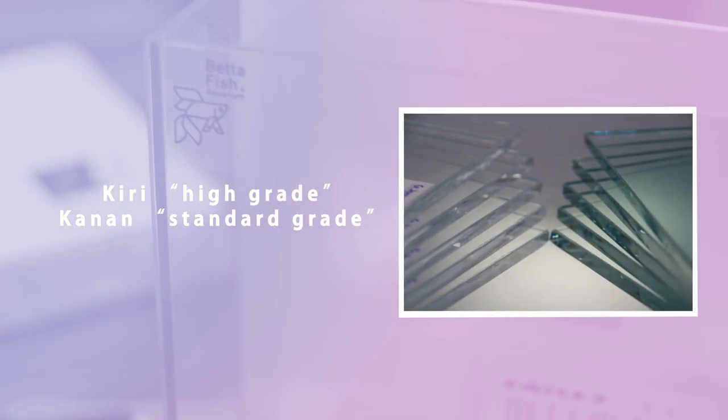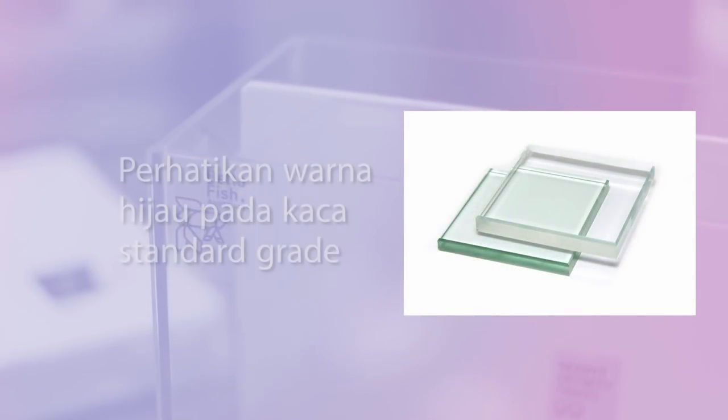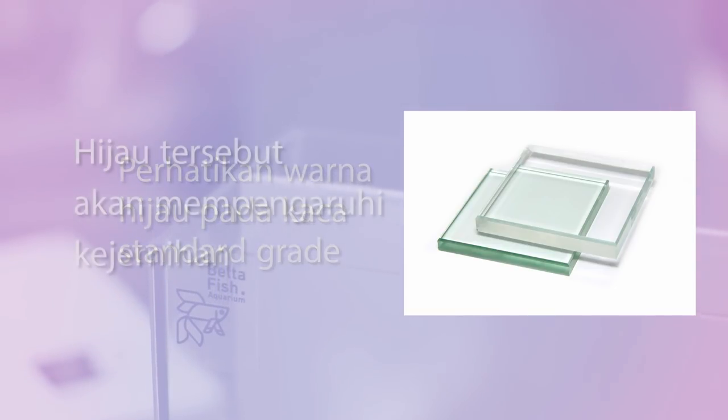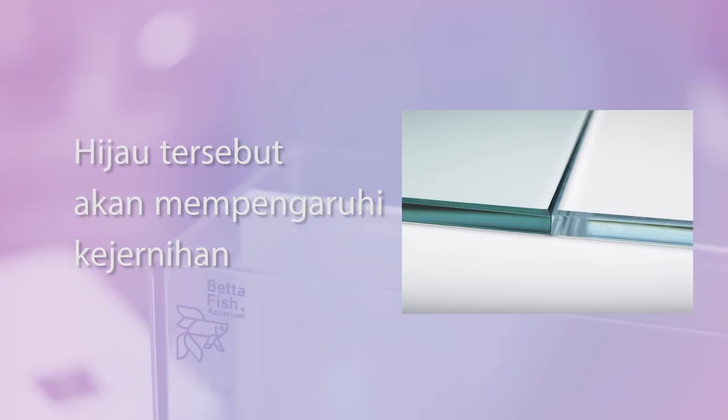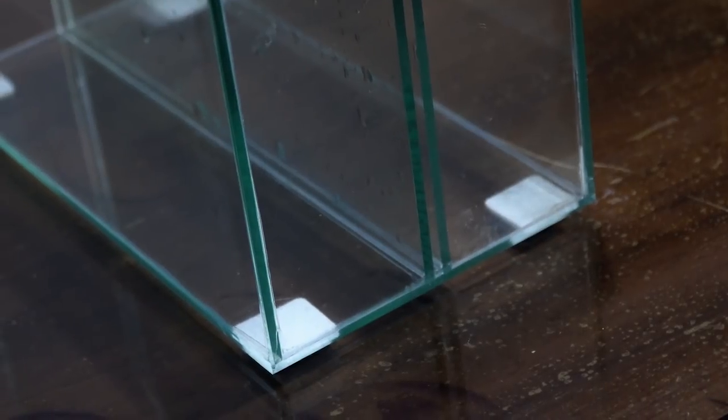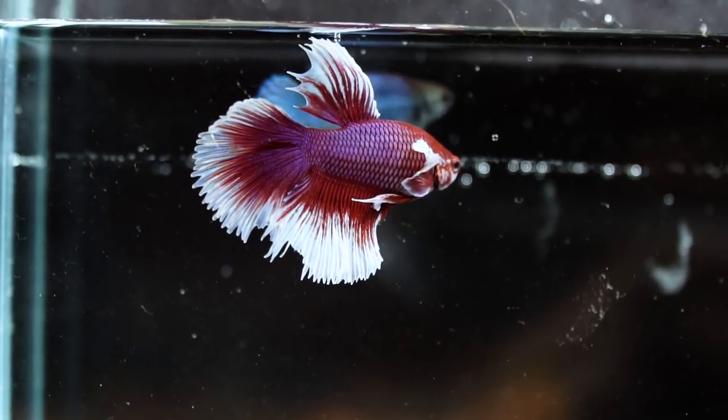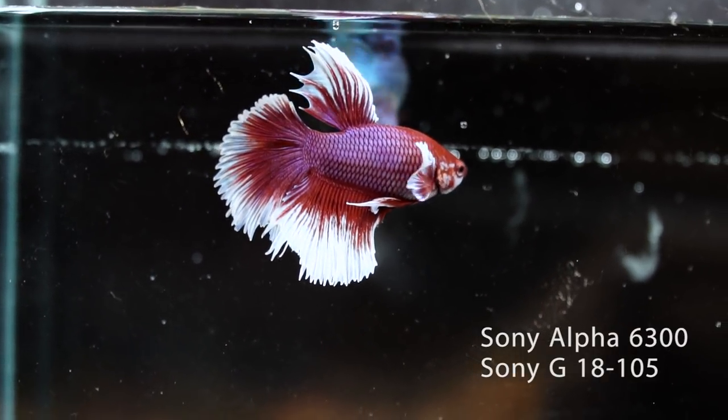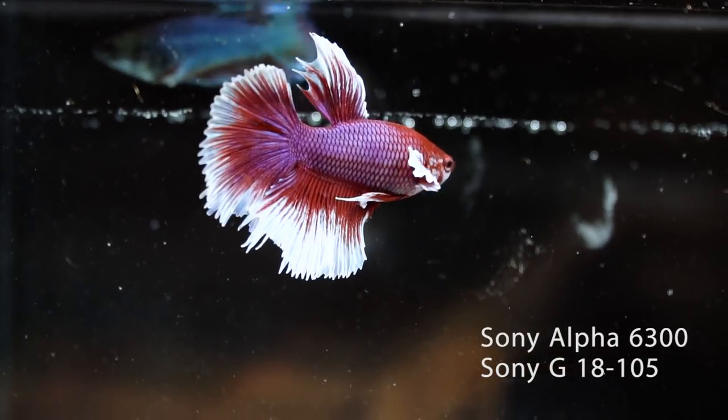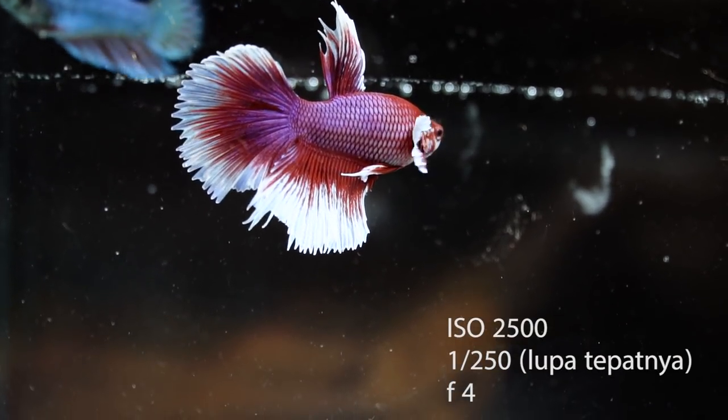Kita mulai dari kejernihan produknya. Beda apa nggak? Kaca itu kan seperti yang kita tau, punya tingkat kejernihan yang berbeda. Semakin tinggi logam yang terkandung di dalamnya, semakin buram juga kacanya. Betta Fish Aquarium ini mengatakan bahwa dia menggunakan kaca Asahi, salah satu produsen kaca terbaik di Indonesia. Gue sendiri percaya dengan Asahi dan memang harganya memang beda. Tapi ini tampaknya adalah kaca medium grade atau yang tidak terlalu jernih. Itu bisa kita lihat dari pinggiran kacanya yang rada hijau ya teman-teman. Jadi itu dia mempengaruhi warna dan mempengaruhi tingkat keterangannya juga.